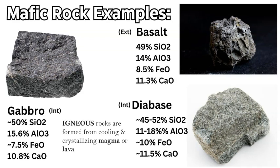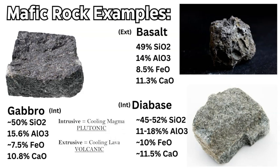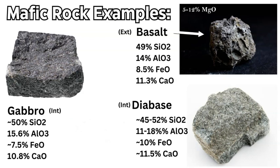As with any igneous rock, mafic rocks can form through intrusive environments through the slow cooling of magma, producing larger crystals, and also through the flowing of lava on the Earth's surface in an extrusive environment — volcanic rather than plutonic. The first common mafic rock is basalt, which is very common: the majority of the ocean floor and ocean crust is composed of basalt, making up about 90% of all volcanic magmas erupting on the surface. Basalt is around 49% silica, 14% aluminum oxide, 8.5% iron oxide, and 11.3% calcium oxide.